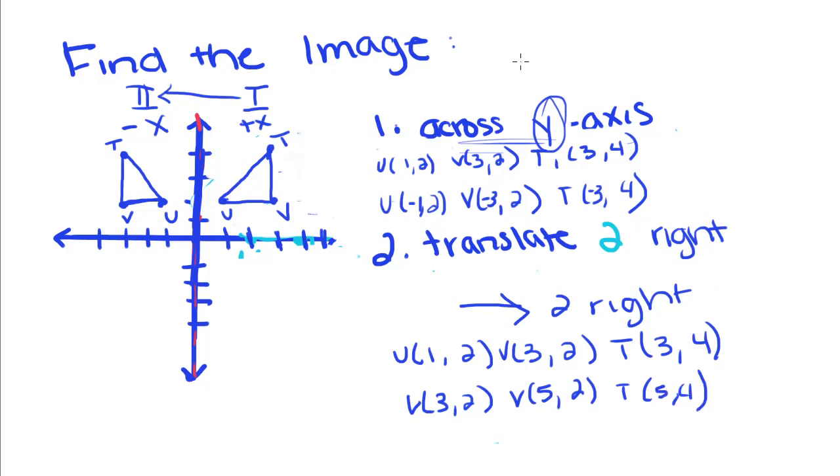So now let's plot this new shape. So 3, 2, this point right here, I'll use a different color so you can see it better. This point right here is now point U. V is 5, 2, this is our new V, and T is up here at 5, 4, and that's our translated image.